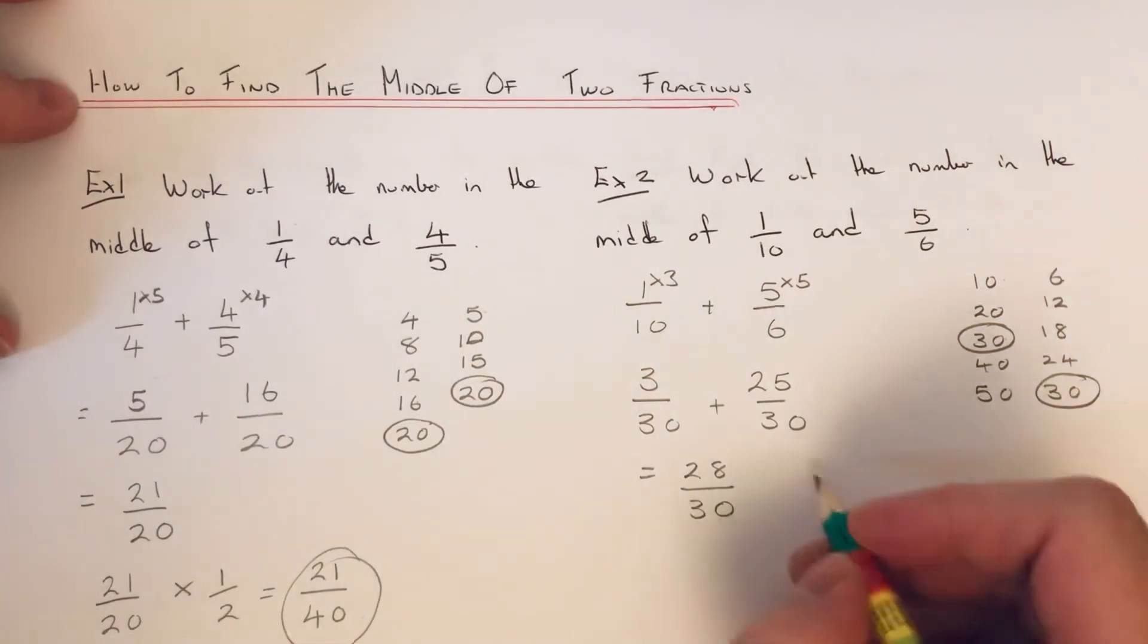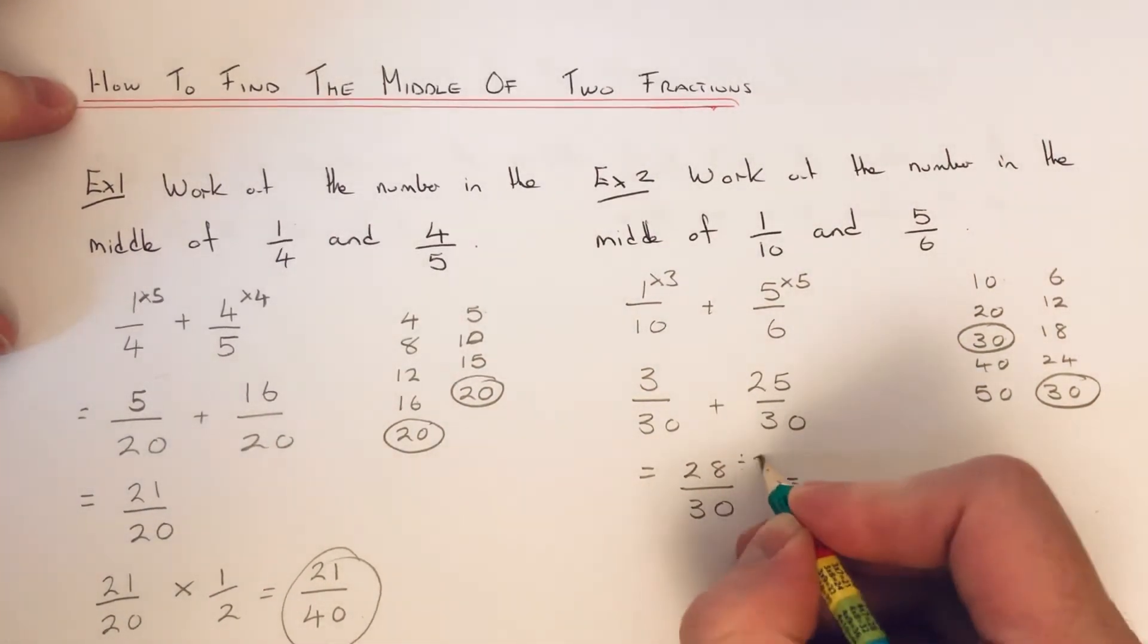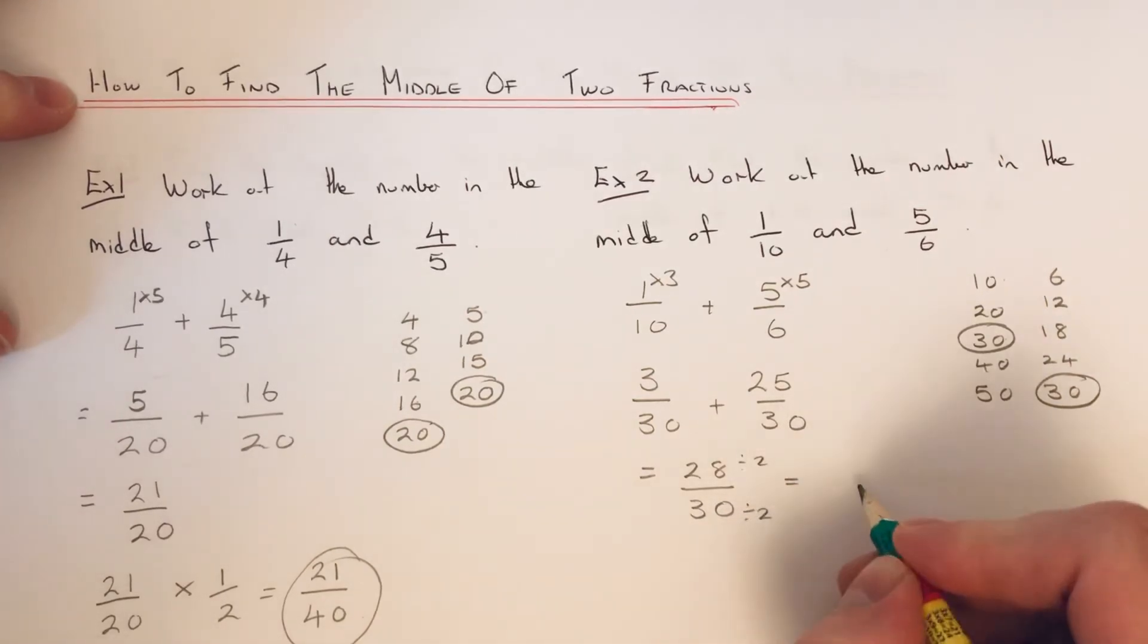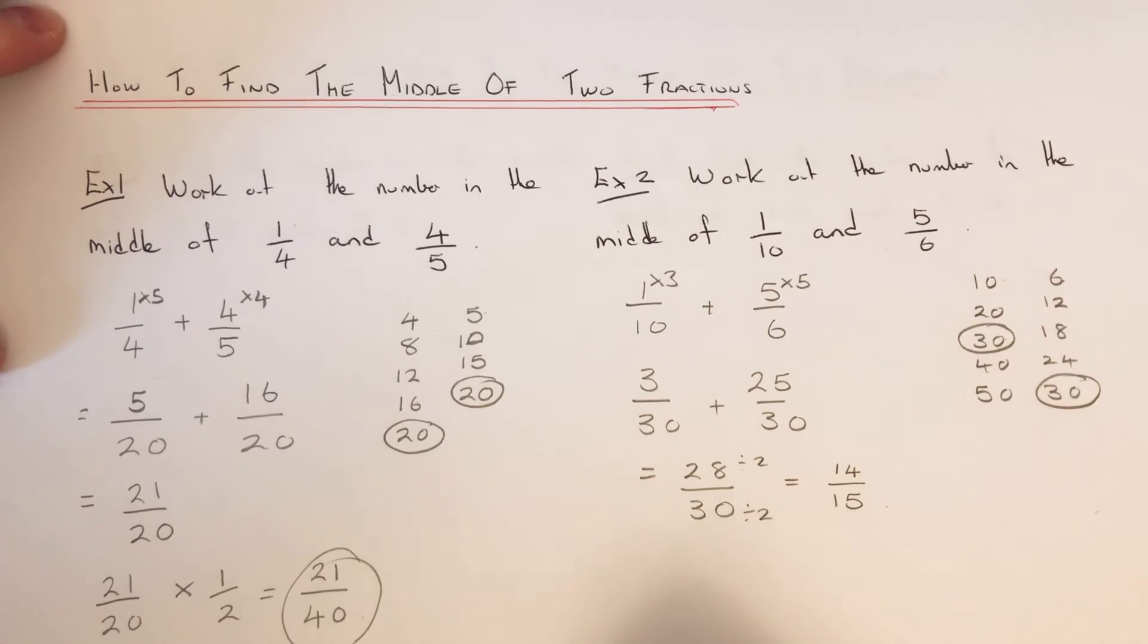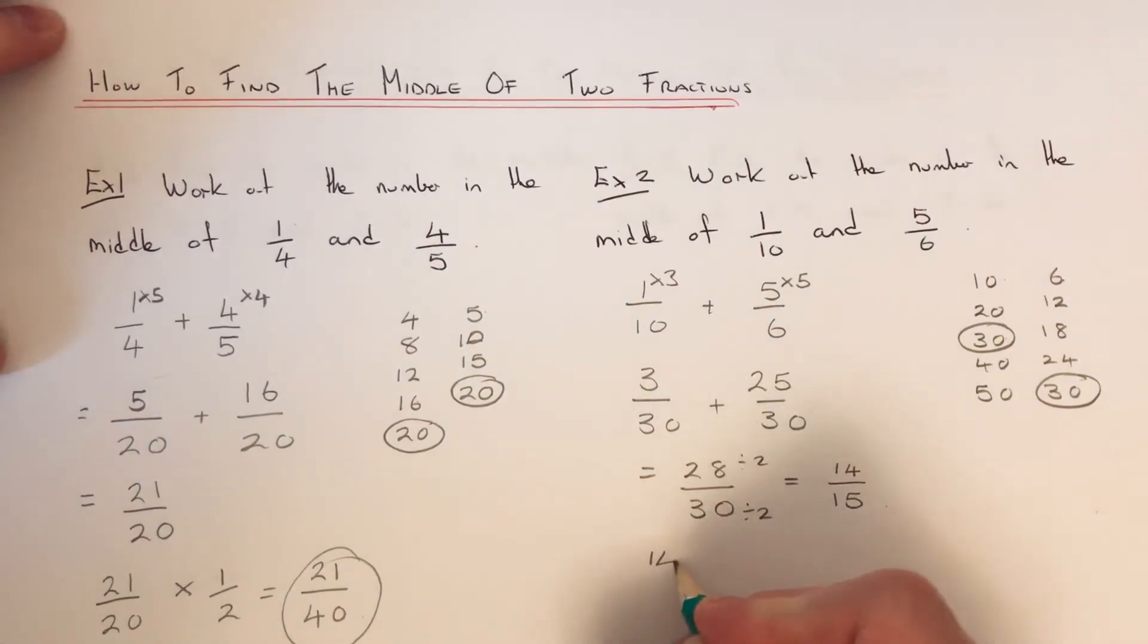So we can simplify this fraction by dividing the top and bottom by two, which gives us fourteen fifteenths. So all we need to do now is half this answer. We can do this by timesing through by a half.